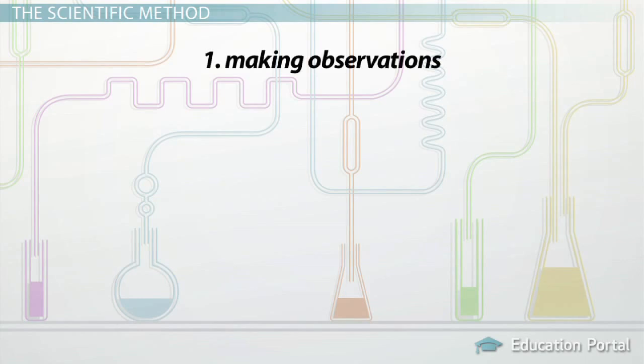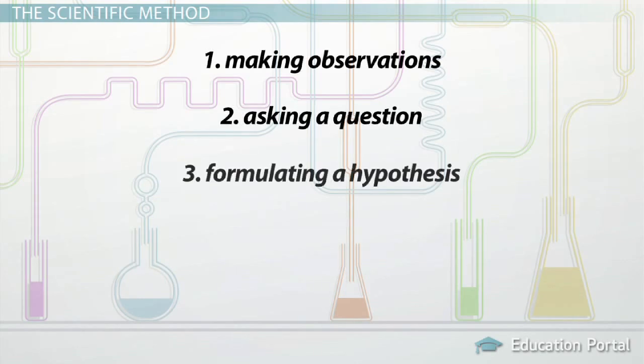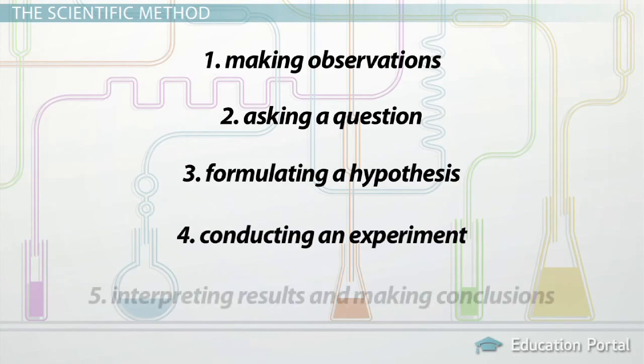The scientific method starts with making observations, and then moves on to asking questions, formulating a hypothesis, conducting an experiment, and ends with interpreting results and making conclusions.